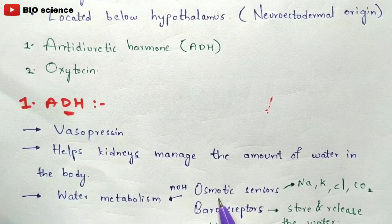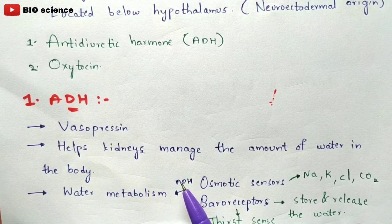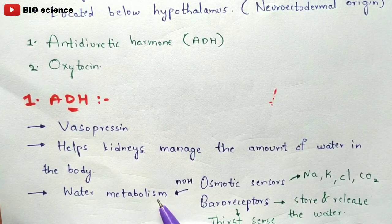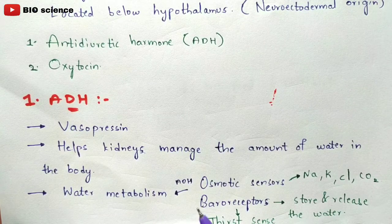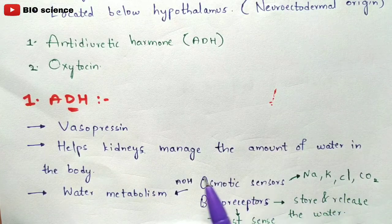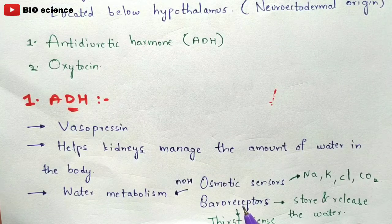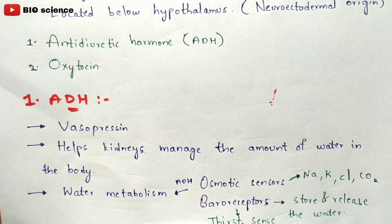The osmotic sensors interact with sodium, potassium, chlorine, and carbon dioxide ions in the blood, reacting with ADH to perform water metabolism. The baroreceptors mainly help in storing and releasing water in the kidney, and they also help sense the feeling of thirst.